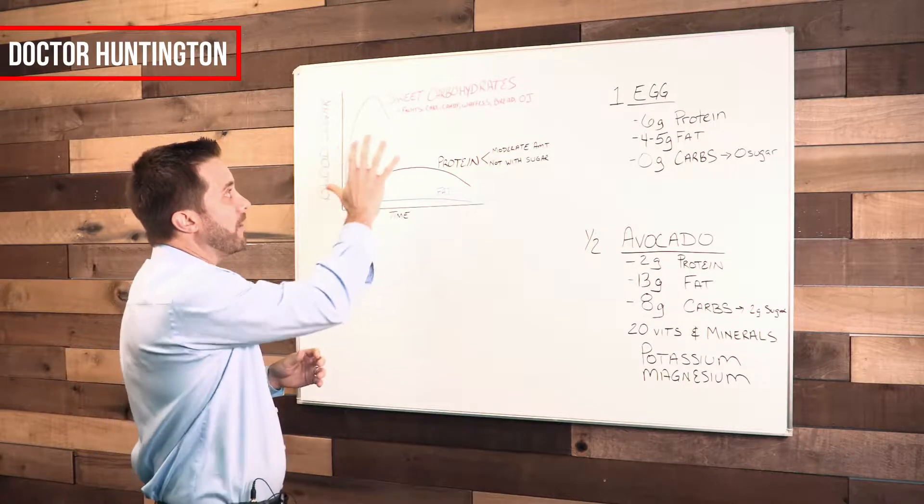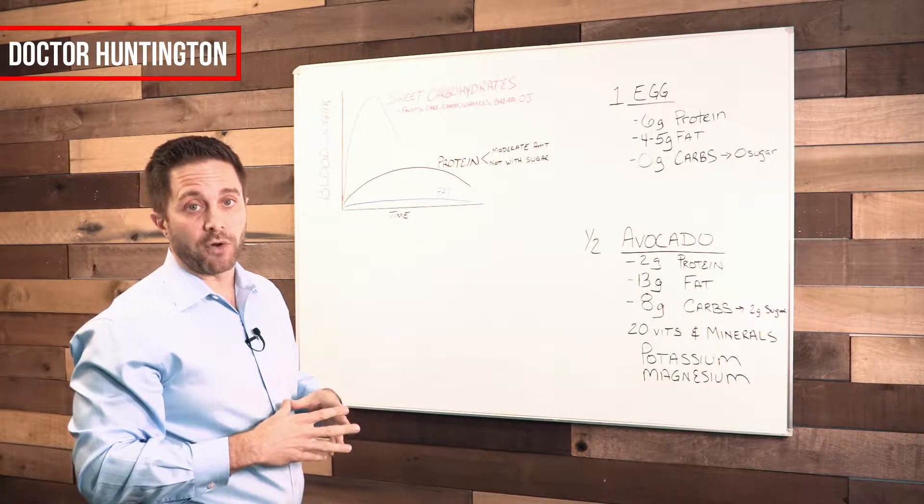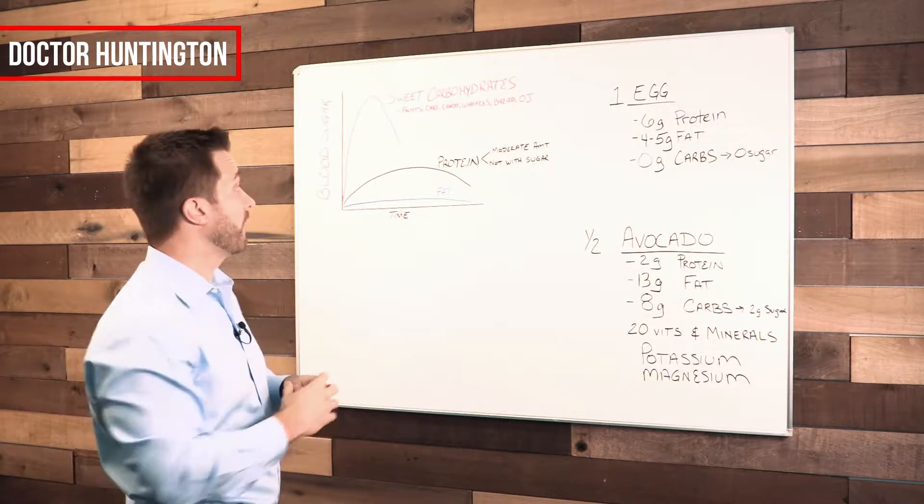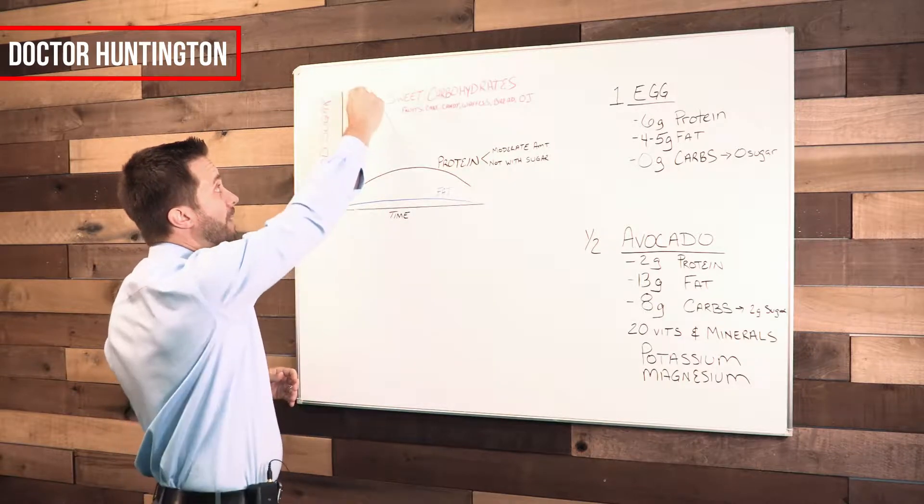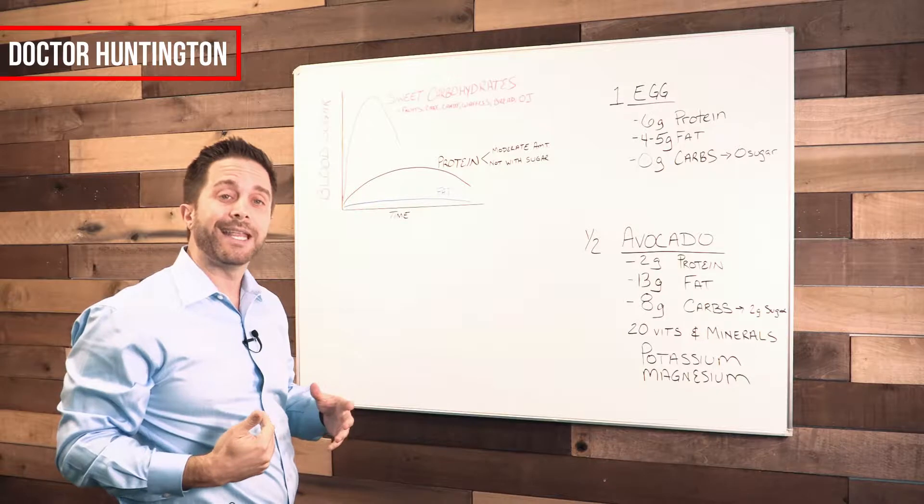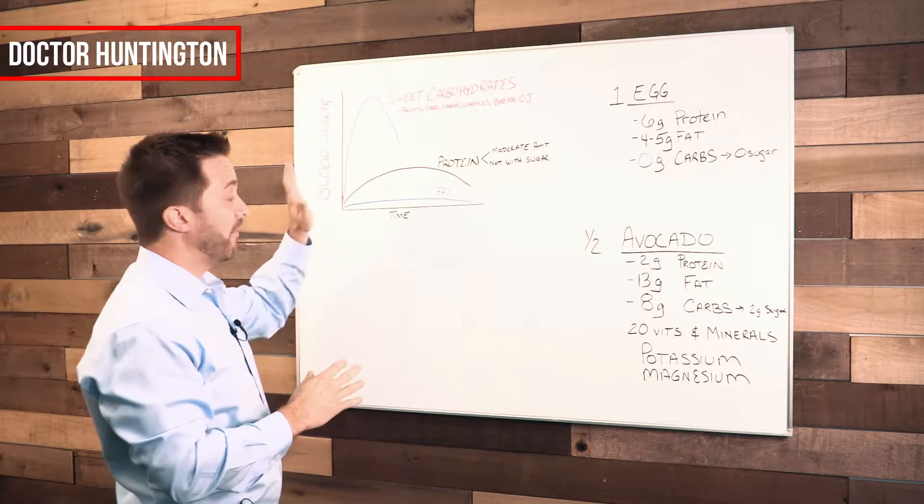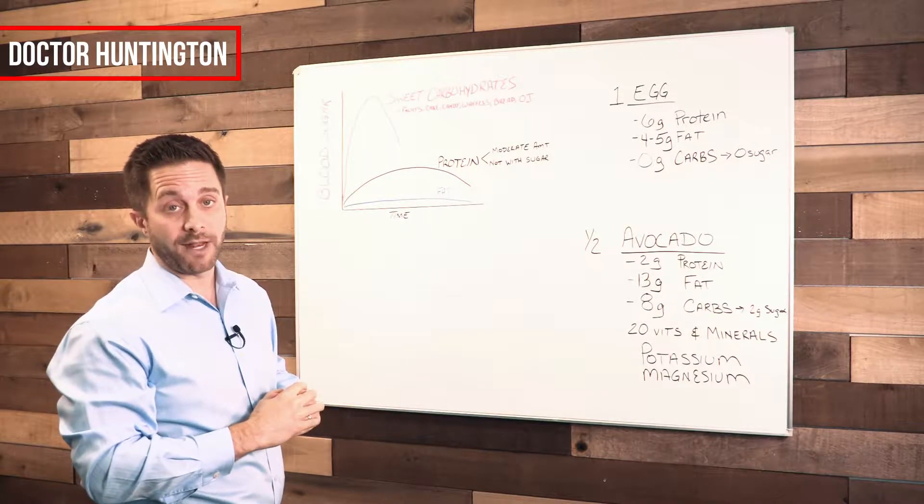When you eat those sweet carbohydrates, you get an immediate spike in your blood sugar. If you're diabetic and you monitor your blood sugar, you already know this. You eat those foods and you get a spike. When that blood sugar rises, you then get an insulin spike to push that sugar out of the blood. That is something you want to avoid as a diabetic.